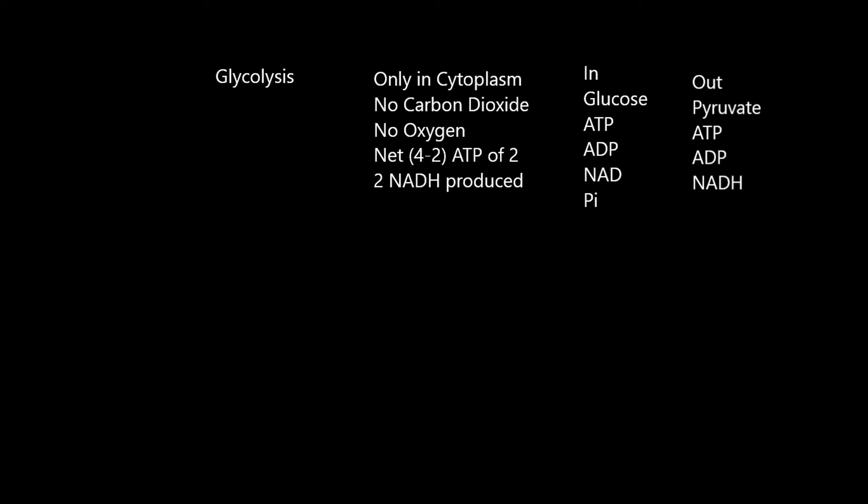Glucose is a hexose sugar, six carbons. First step is it gets phosphorylated by ATP going in, turning it into glucose phosphate. Then it gets phosphorylated again by another ATP, which turns it into hexose bisphosphate—bi means two.